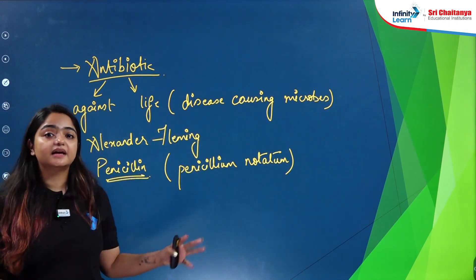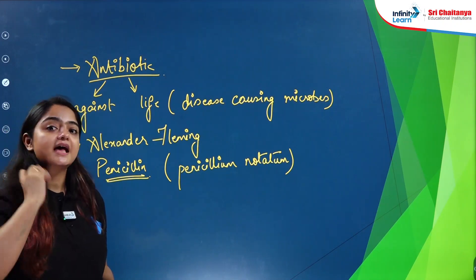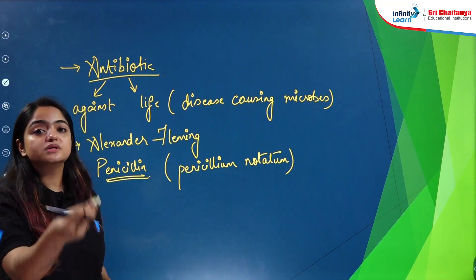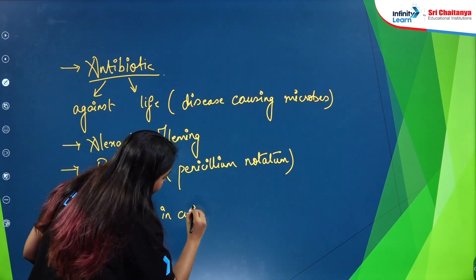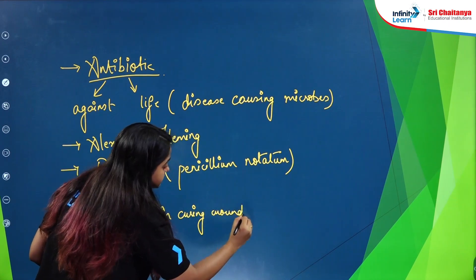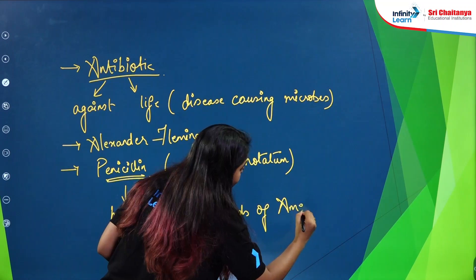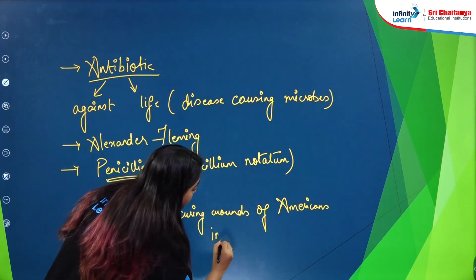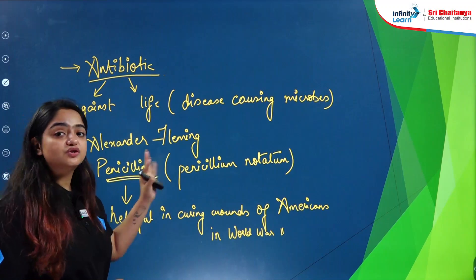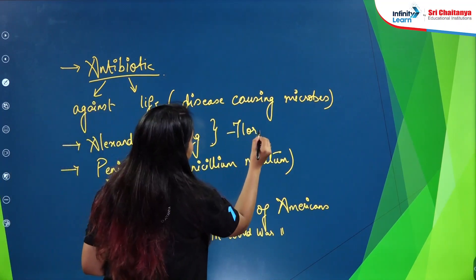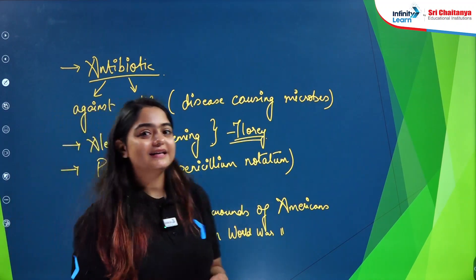Penicillin was really, really important because it was actually helpful in curing wounds of Americans during the Second World War. It was introduced by Alexander Fleming, but later the proper usage was also elaborated by Florey. So those were all the utilizations of the microbes we discussed today. I hope you found this session interesting — please do not forget to hit the like button, and I'll see you in the next session with more interesting facts. Thank you.